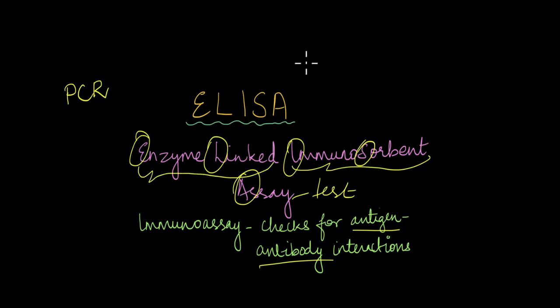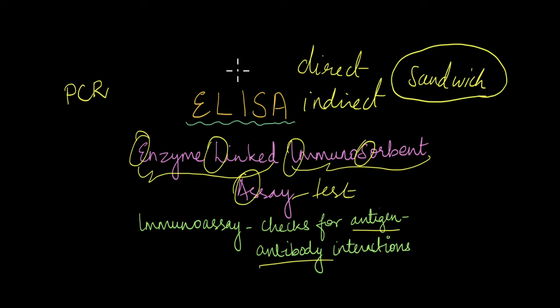There are different types of ELISAs like direct, indirect, and sandwich. In this video, we're going to focus on this sandwich type of ELISA. We'll talk about direct and indirect in other videos. ELISA has a lot of applications. It can be used to diagnose diseases like HIV, COVID-19, a lot of genetic disorders and types of cancers as well.